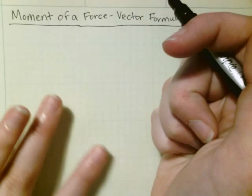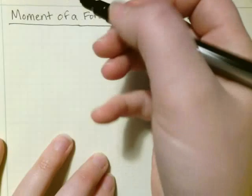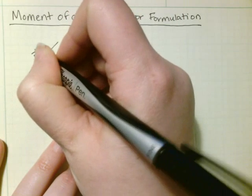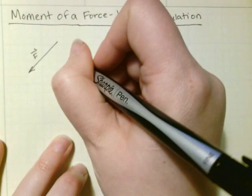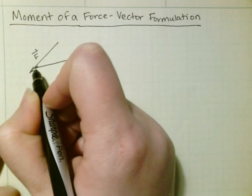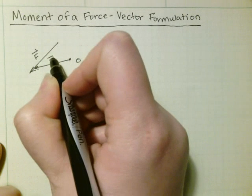So this is the moment of a force for vector formulation. If we had a force F and a point O that we wanted to find the moment about, we would have our distance from O to F of R.